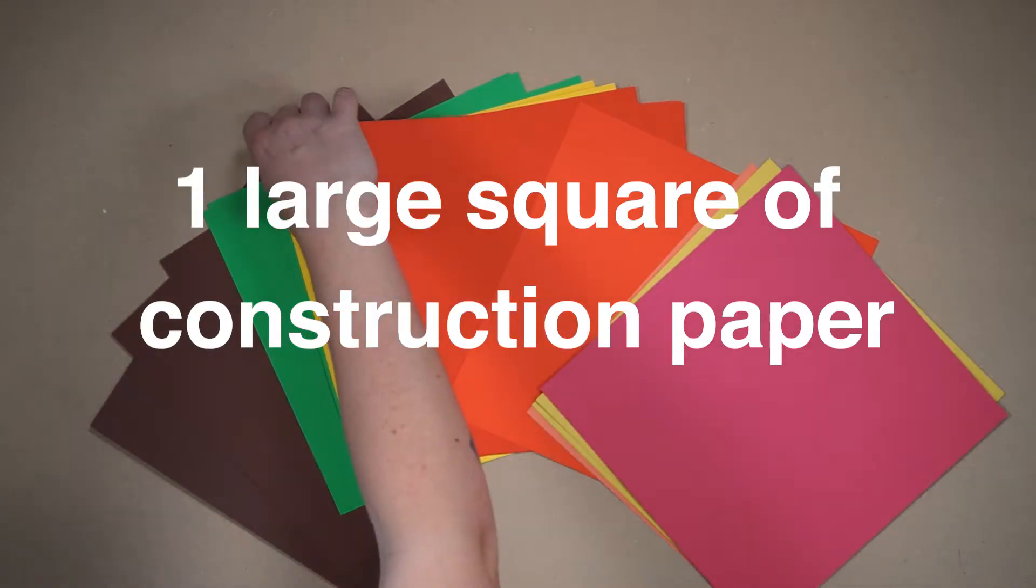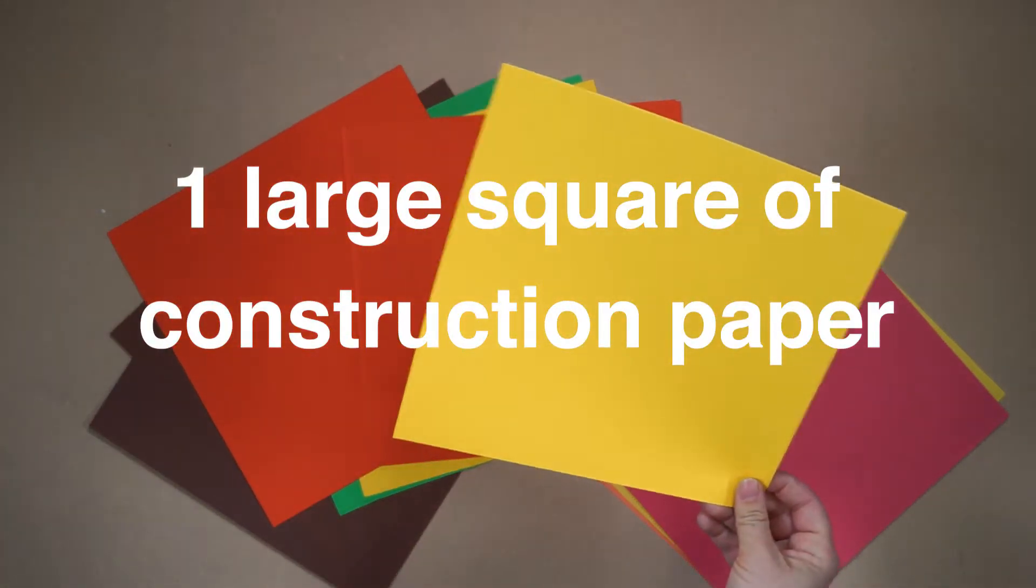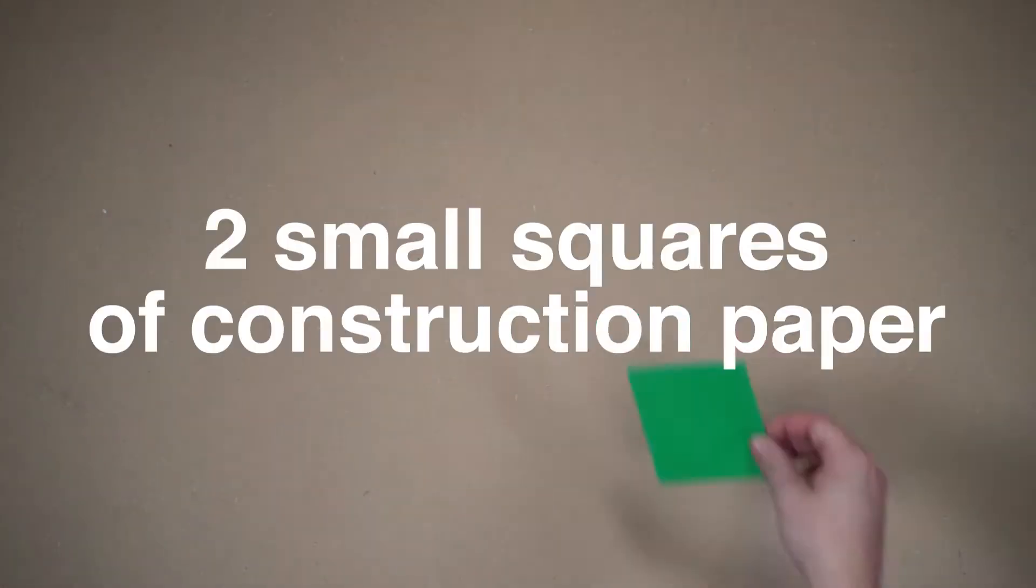You will need one large square of construction paper. This will be your background. You will also need two small squares of construction paper and one square of tissue paper. The tissue paper will allow you to create lighter or darker versions of a color.